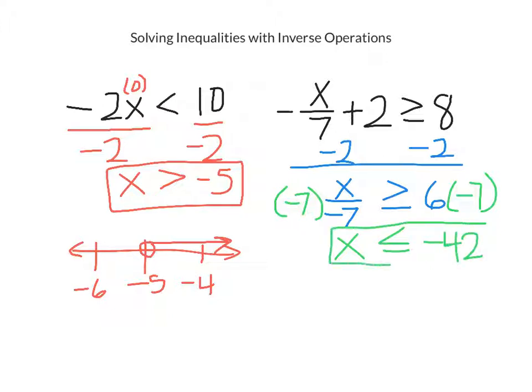And then my number line is not a problem because I don't have to try to include 0 and do all that difficult stuff to try to fit everything on the line. Negative 43 is on the left, and negative 41 is on the right. This one is equal to it, so I put a closed dot, and the values that are less than go to the left.